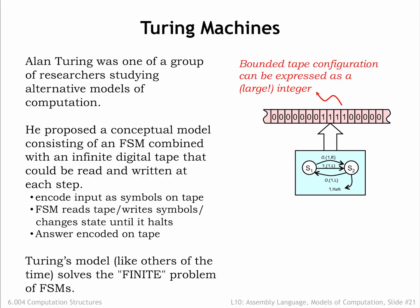So how does all of this relate to computation? Assuming that non-blank input on the tape occupies a finite number of adjacent cells, it can be expressed as a large integer — just construct a binary number using the bit encoding of the symbols from the tape, alternating between symbols to the left of the tape head and symbols to the right of the tape head. Eventually all the symbols will be incorporated into the very large integer representation. So both the input and output of the Turing machine can be thought of as large integers, and the Turing machine itself is implementing an integer function that maps input integers to output integers.